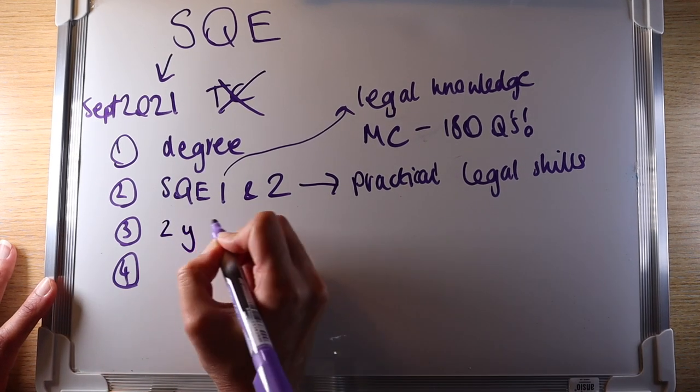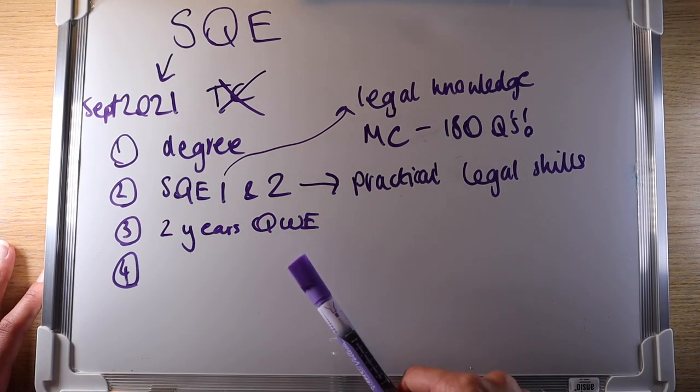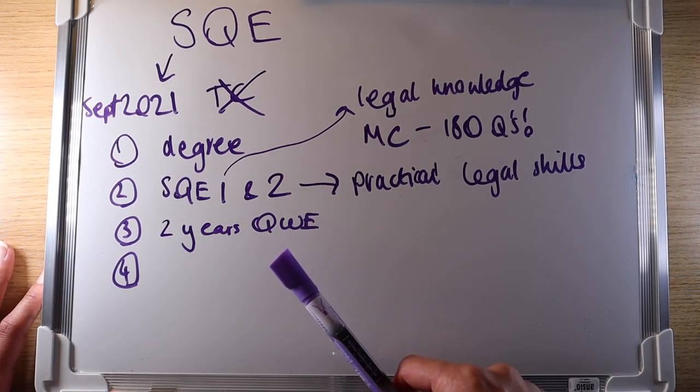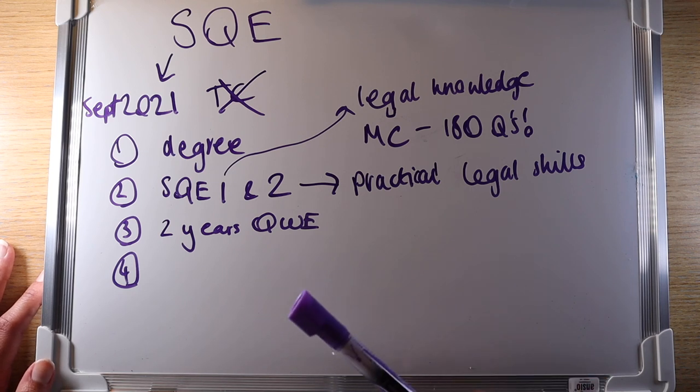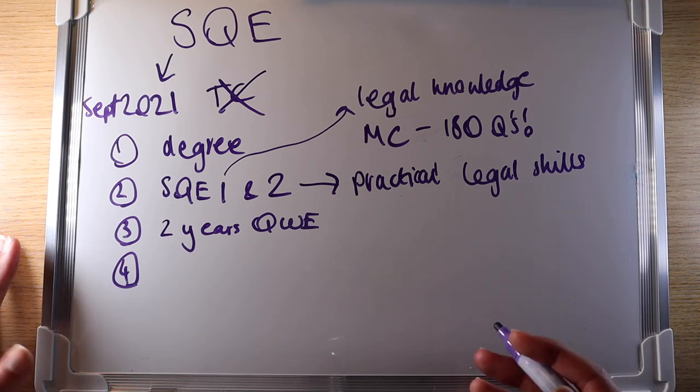Thirdly, you must have a minimum of two years qualifying work experience. This is quite similar to a training contract in my opinion. It may be completed with up to four different legal employers, just like the four seats that you may typically complete during a training contract.